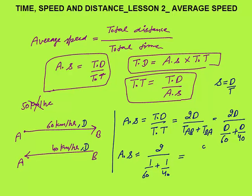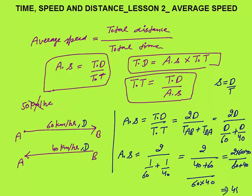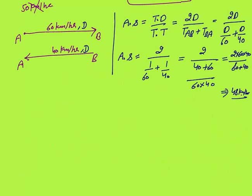Solving this: take the LCM of 60 and 40 to get average speed = 2 × 60 × 40 / (60 + 40). Calculating this gives 4800 / 100 = 48 km/h. So the average speed is 48 km/h.